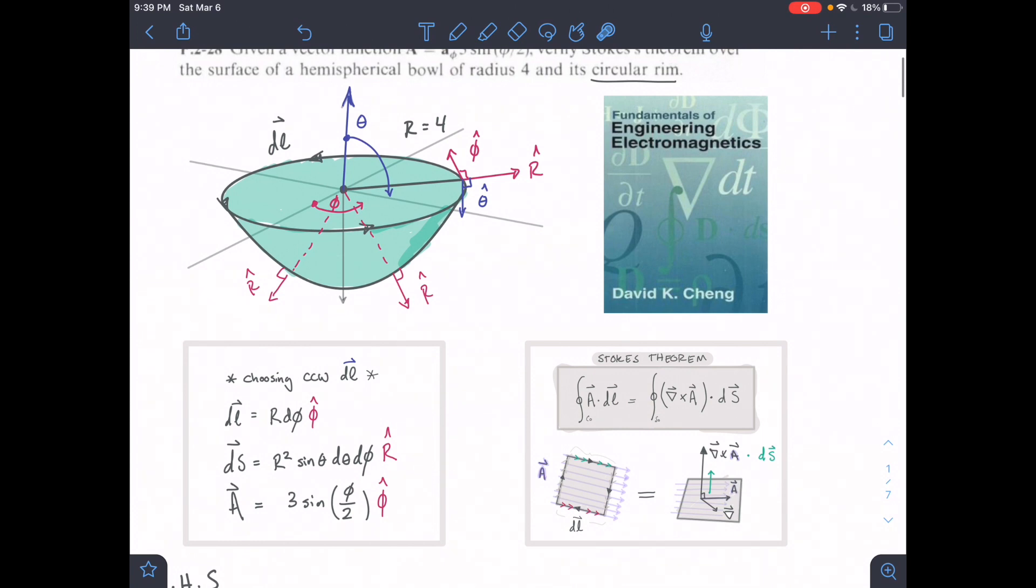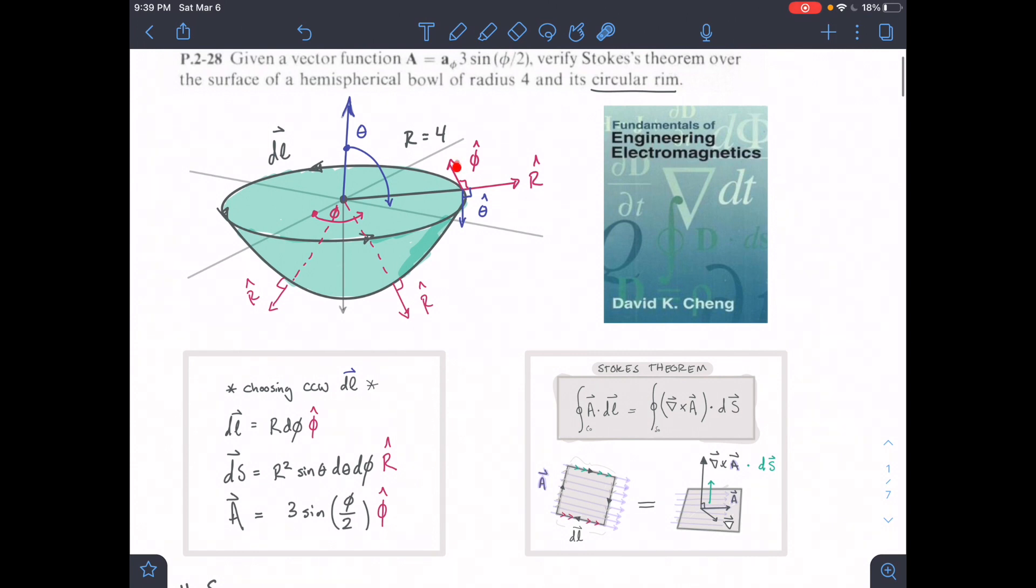I have them written down here. Our DL first off will be R d phi in the phi hat direction. This is our phi hat direction - it rotates with our phi angle and points in the direction of the phi angle displacement. It's moving around this coordinate system as phi changes. That is our phi hat direction, and we have R d phi.